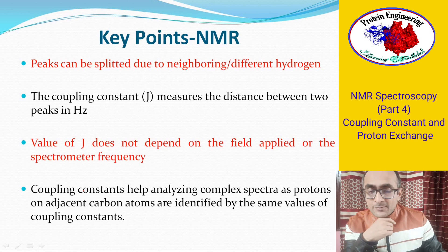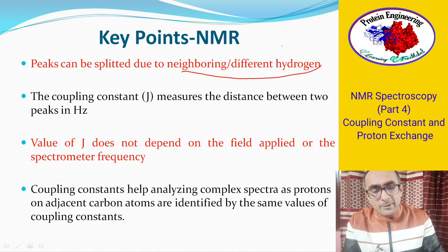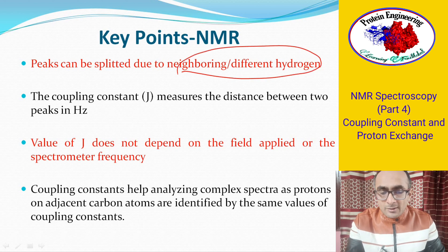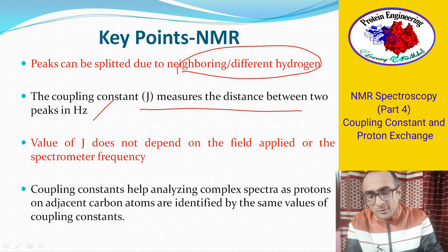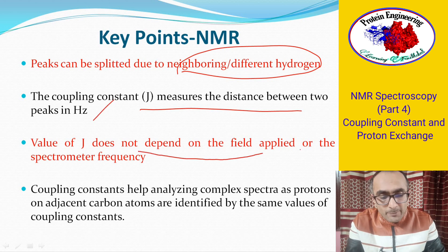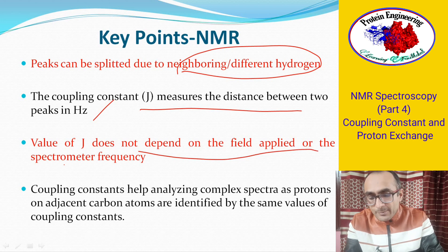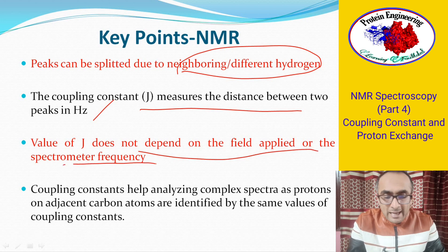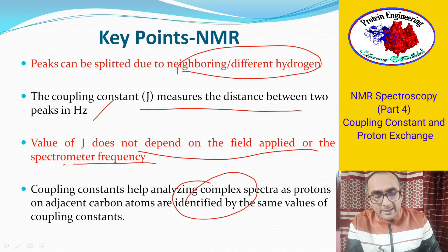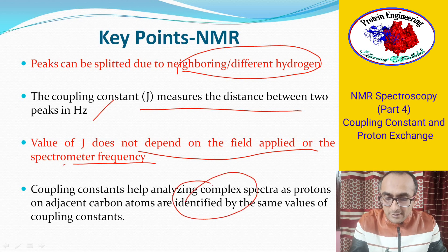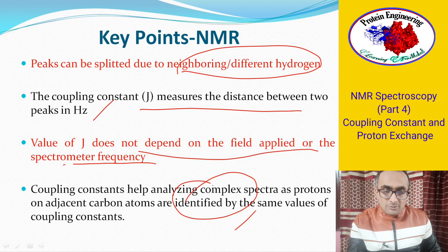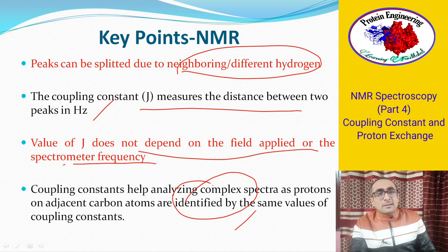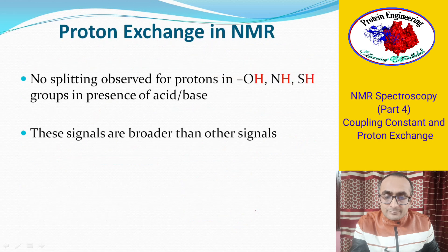Key points: peaks can be split due to neighboring different hydrogen atoms; the coupling constant measures the distance between two peaks in hertz; the value of the coupling constant does not depend on the applied field or the spectrometer frequency; and coupling constants help analyze complex spectra, such as those of proteins or nucleic acids, by identifying which protons are in each other's neighborhood.